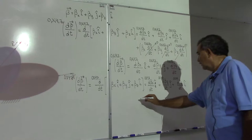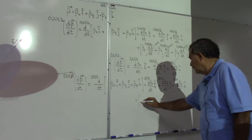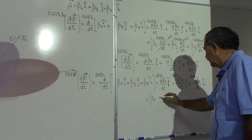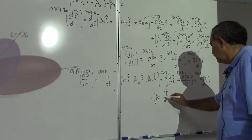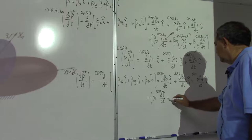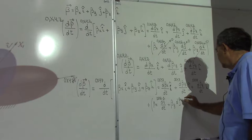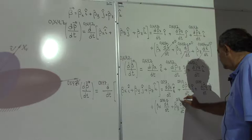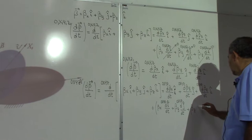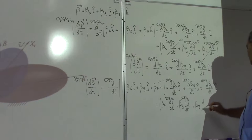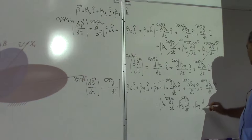However, in this particular case we also need to add the time derivatives of the unit vectors, because we need to write beta x times the time derivative of unit vector i with respect to the fixed reference frame, plus beta y times the time derivative of unit vector j with respect to time and with respect to the fixed reference frame, plus beta z times the time derivative of unit vector k with respect to time and with respect to O, x, y, z.